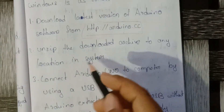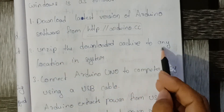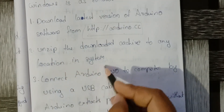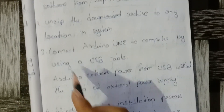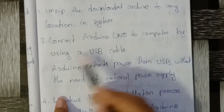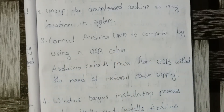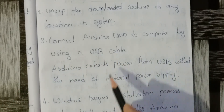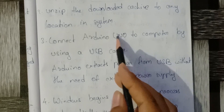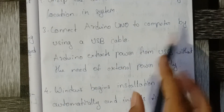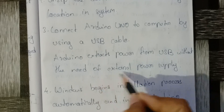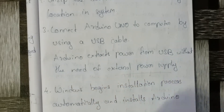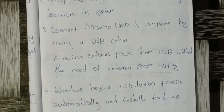Next, unzip the downloaded archive to any location on the system, since it comes in zip format. Then connect the Arduino Uno to the computer using a USB cable. Arduino extracts power from the USB connection, so there is no need for an external power supply.